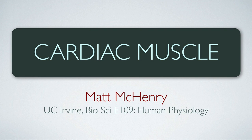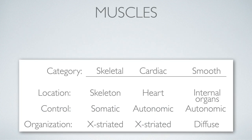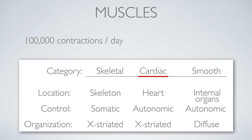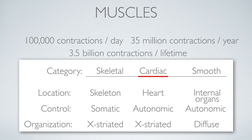We're going to begin a consideration of the cardiovascular system by returning to cardiac muscle. We've already talked about how cardiac muscle compares to skeletal muscle in terms of its excitation-contraction coupling. But our return now with a focus on cardiac muscle is going to focus on a particular property: the fatigue resistance of cardiac muscle. Your heart beats about 100,000 times a day, which amounts to 35 million contractions in a year and billions of contractions in a lifetime. And it never stops.